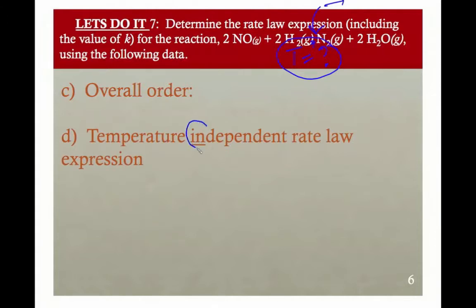Now, our temperature independent rate law doesn't specify K. So we had rate equals K times the partial pressure of NO squared times the partial pressure of H2. Remember, can't use stoichiometric coefficients because this is not an elementary reaction. It's an overall.